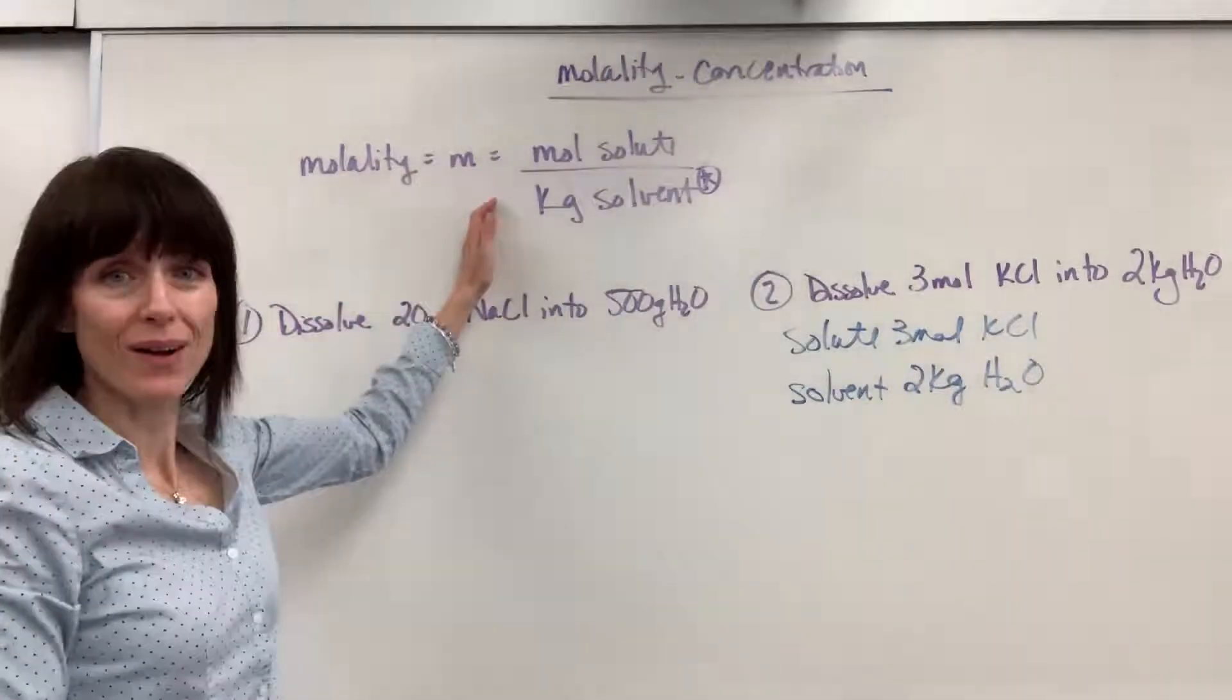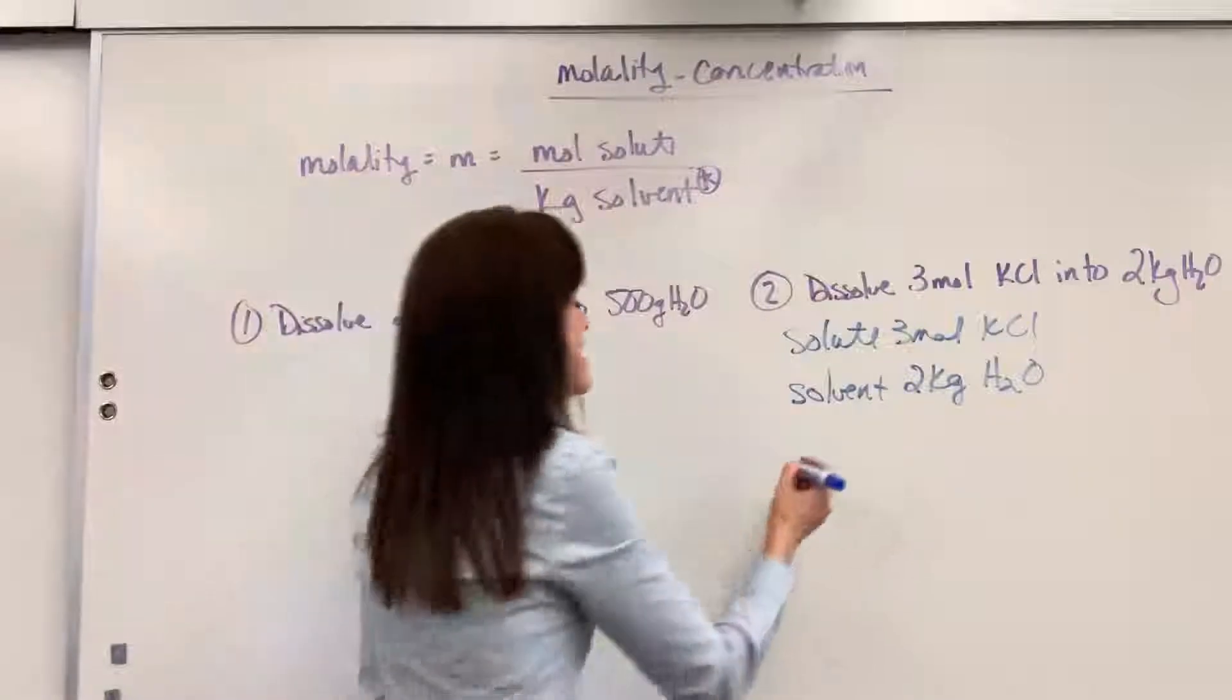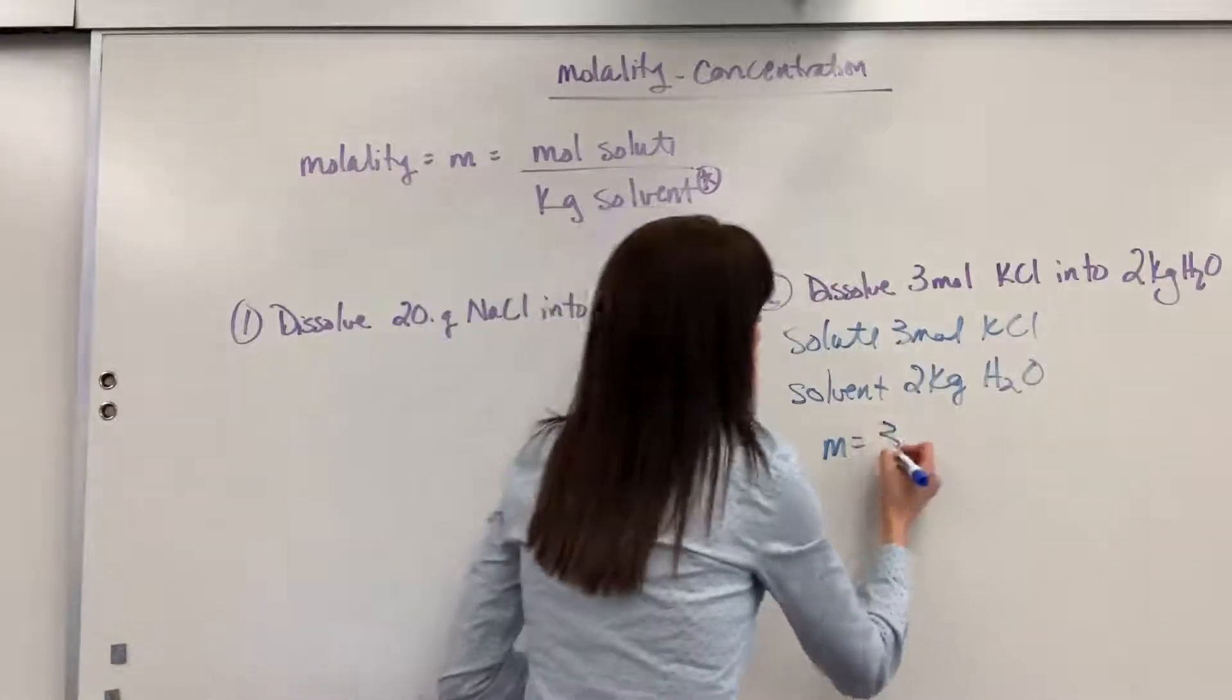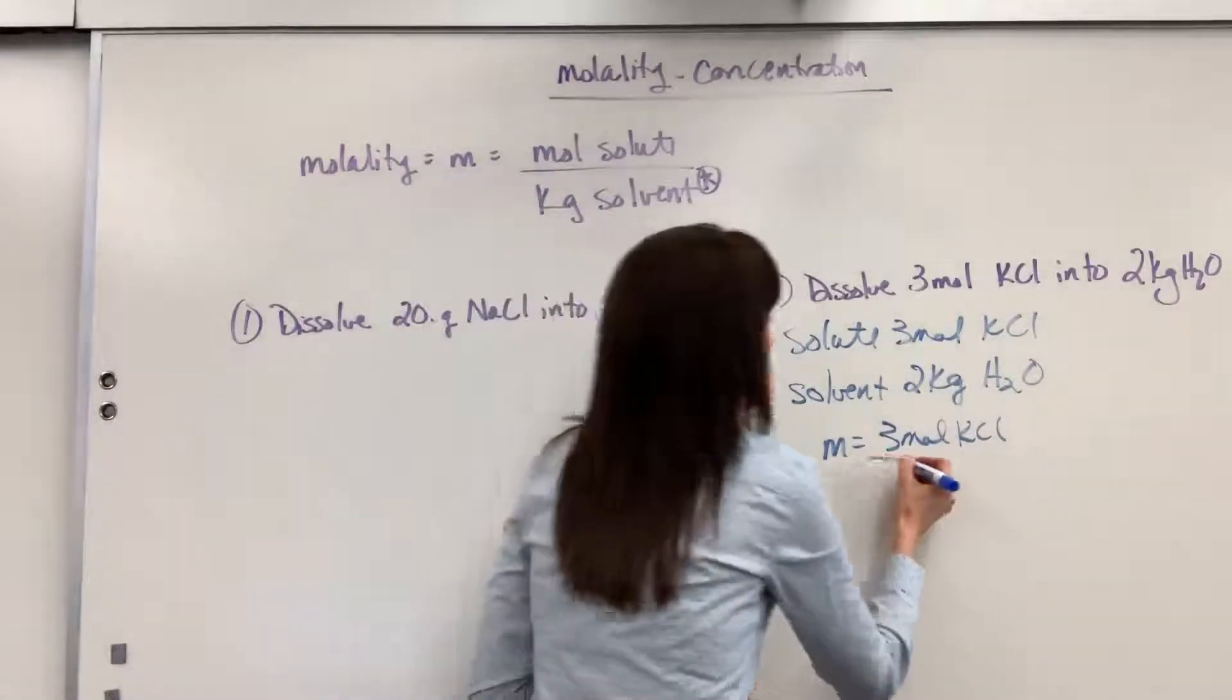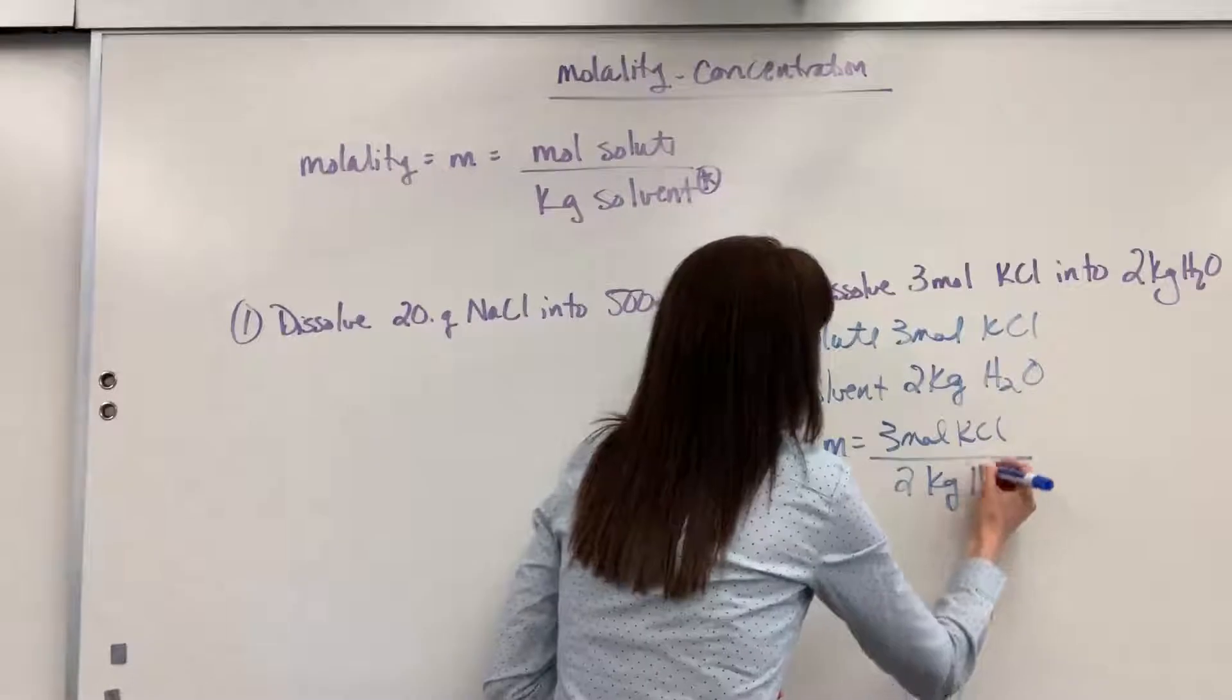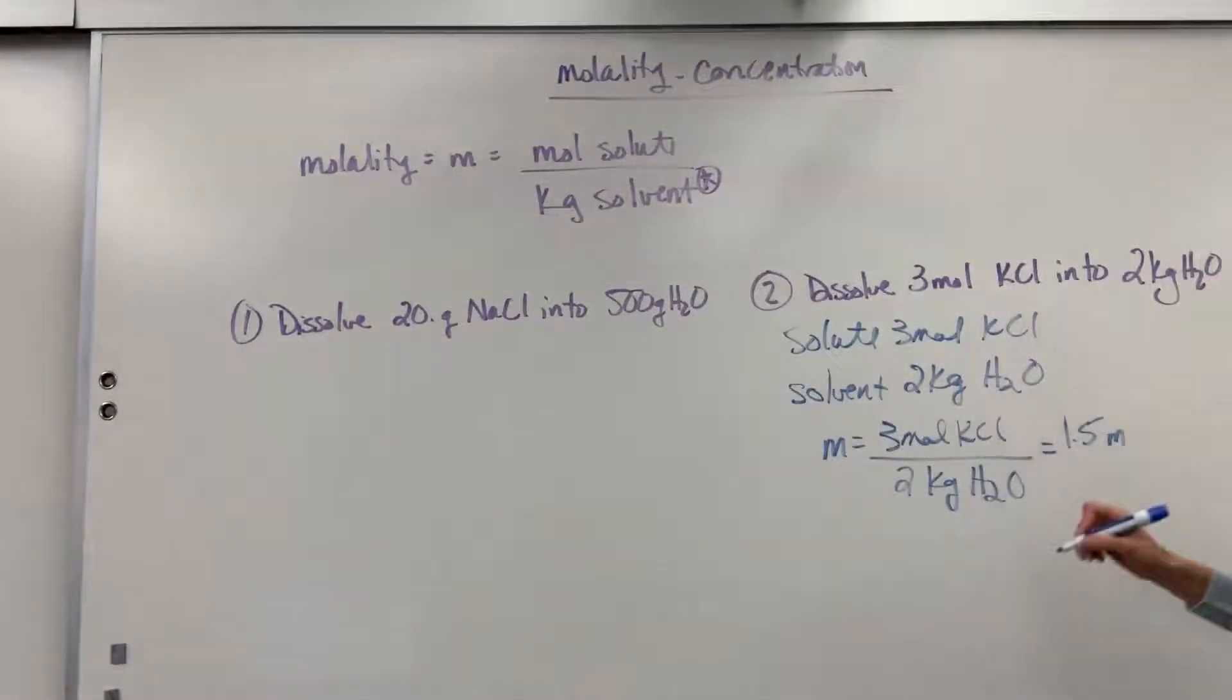Now, I simply take my concentration here, the ratio. Moles of solute divided by kilograms of solvent. So little m, molality, is going to equal the moles of solute, three moles of potassium chloride, divided by my kilograms of solvent, two kilograms of water. And that will give us 1.5 molal potassium chloride.